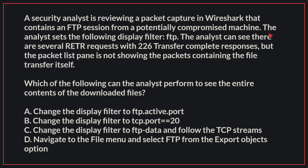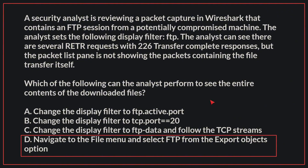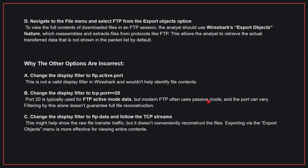A security analyst is reviewing a packet capture in Wireshark that contains an FTP session from a potentially compromised machine. The analyst sets the following display filter: FTP. The analyst can see there are several RETR requests with 226 transfer complete responses, but the packet list pane is not showing the packets containing the file transfer itself. Which of the following can the analyst perform to see the entire contents of the downloaded files? The correct answer is D. Navigate to the file menu and select FTP from the Export Objects option. To view the full contents of downloaded files in an FTP session, the analyst should use Wireshark's Export Objects feature, which re-assembles and extracts files from protocols like FTP. This allows the analyst to retrieve the actual transferred data that is not shown in the packet list by default.